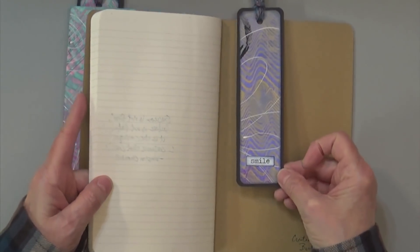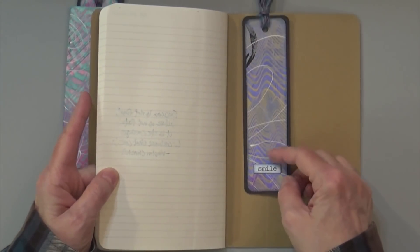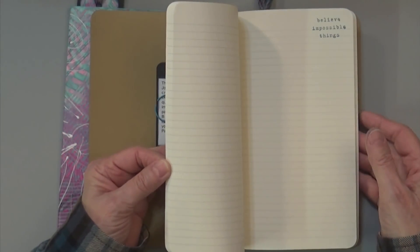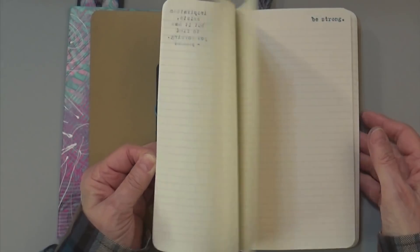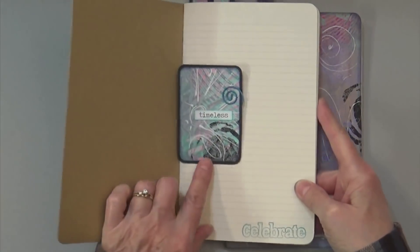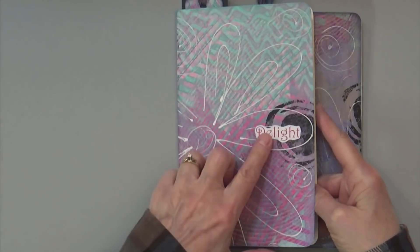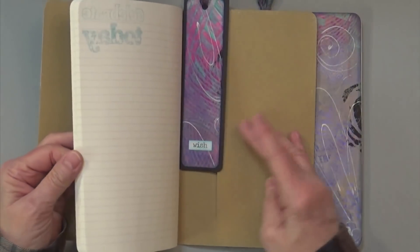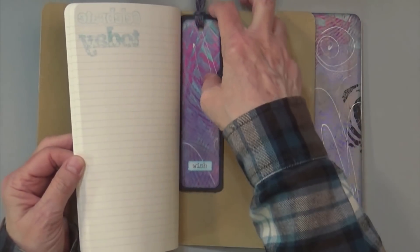There's some of the stamping just to color the pages a little bit. Here's this one—Timeless. The name of this one is Delight. Timeless and Wish on the bookmark. These two.